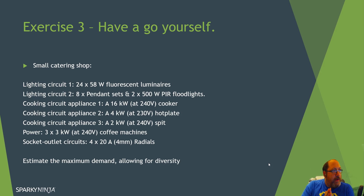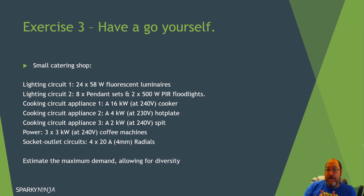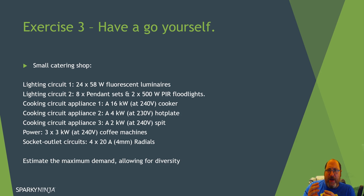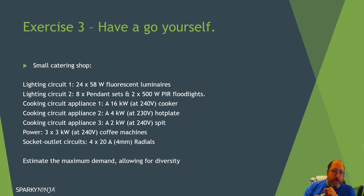The scenario includes two light circuits: one with 24×58W fluorescent luminaires, and one with 8 pendant sets and 2×500W PAR floods. There are 4 cooking appliances — remember this is a catering shop, so we're not thinking of household-type use, we're thinking of full demand use. They'll be powered with separate circuits. There's also a requirement for 3 power appliances, which are coffee machines.